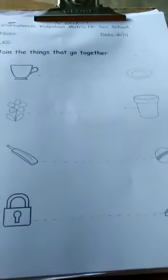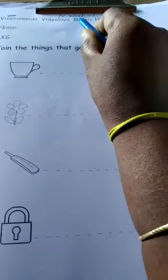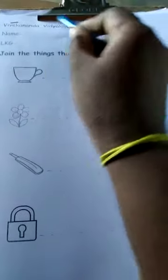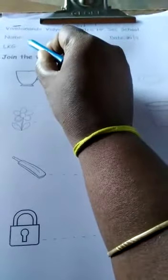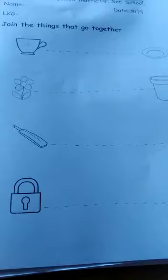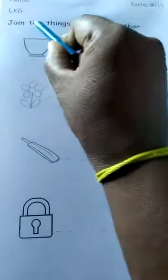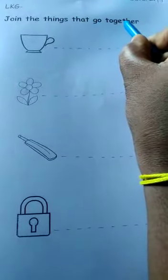Children, all of you take today worksheet number one. Write the name and date. Children, see, join the things that go together.